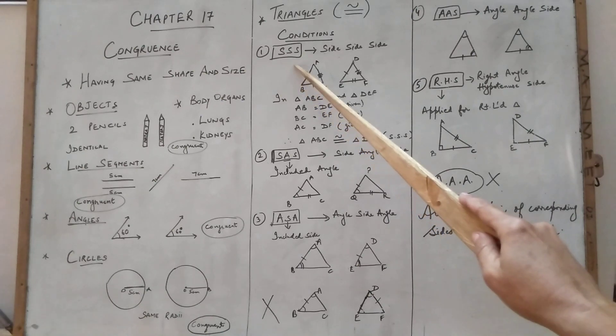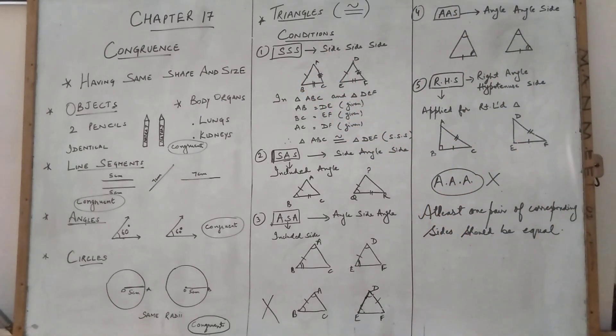Now see children, you will be having one point in your mind. There are three SSS side, side condition. Why there is not a condition of AAA, angle, angle, angle? So children there is no such type of condition. Why? Because at least one pair of corresponding side should be equal. In AAA, no side is there. See, angle, angle, angle. No side is given, so there is no such type of condition.